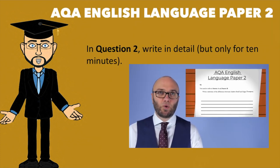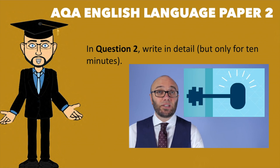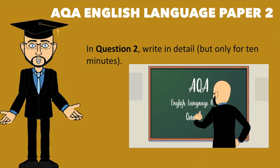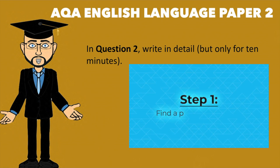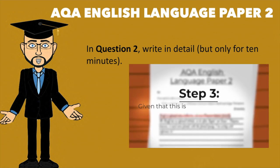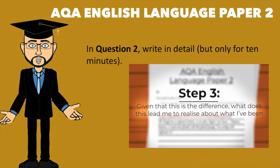If you've seen my animated videos, you'll know that question 2 is about inferring or interpreting meaning. One good approach is, for example in a question about summarising differences, to find a point of difference, back it up with relevant quotations, and then ask yourself: given that this is the difference, what does this lead me to realise about what I've been asked to focus on? That last bit is where the inference comes in. What I want to focus on for this video is how the June 2019 report gave a helpful tip on how you might achieve this.